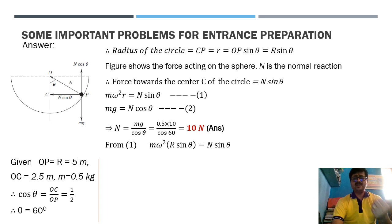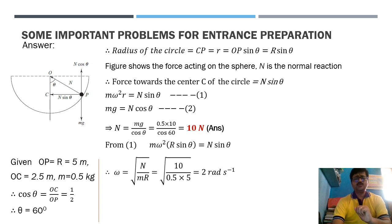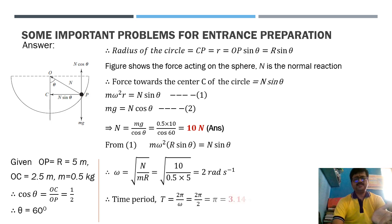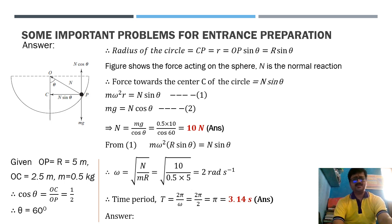To find the time period, we first find omega from equation one. Replacing r as R sin theta, omega works out to 2 radian per second. Time period T equals 2 pi over omega, which is 2 pi divided by 2, giving pi seconds, or approximately 3.14 seconds. So the answers are 10 newton and 3.14 seconds.